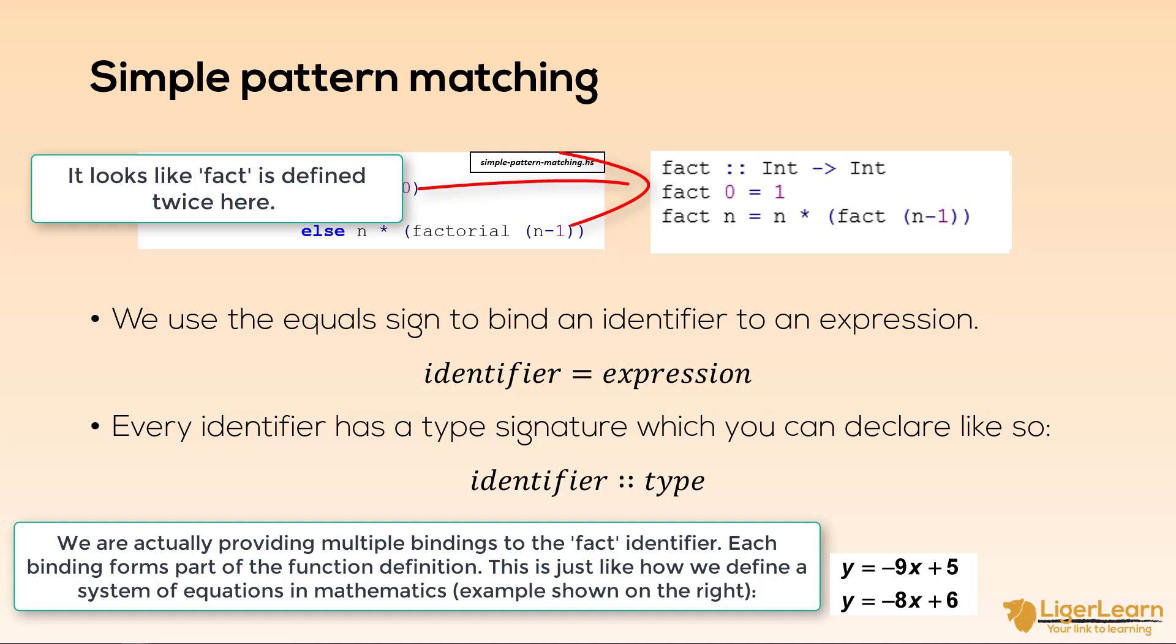Pattern matching allows you to define functions in your Haskell code like you are defining a system of equations in mathematics. We will come back to this factorial example in a bit, but for now let's delve into pattern matching more so we can understand how it works and what the rules are.